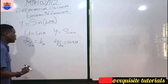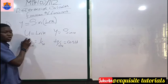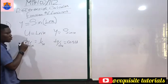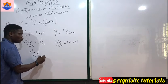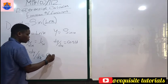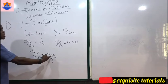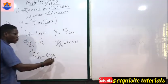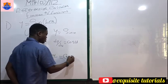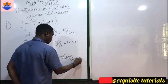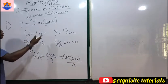Remember in the chain rule, when we multiply these two together the du cancels out. So we have dy/dx = cos(u) / x. Since u = ln x, our final answer is dy/dx = cos(ln x) / x.